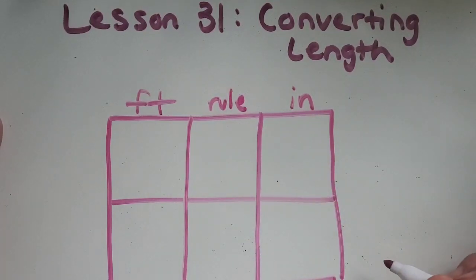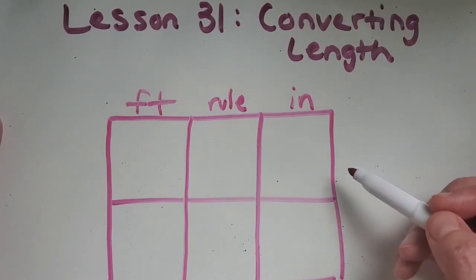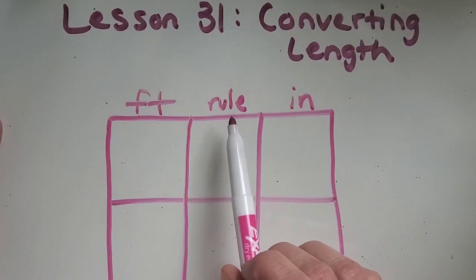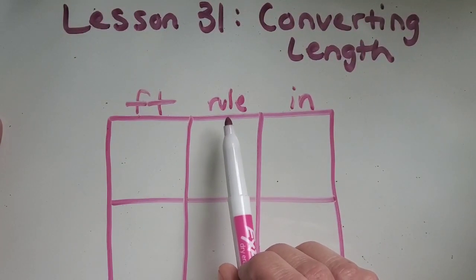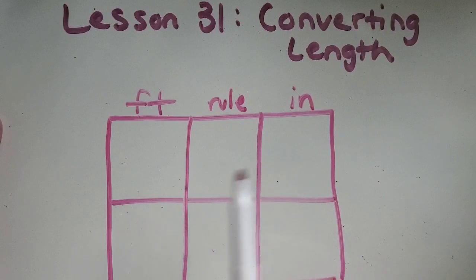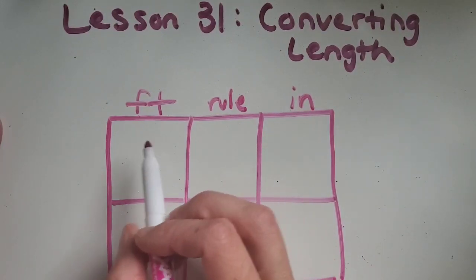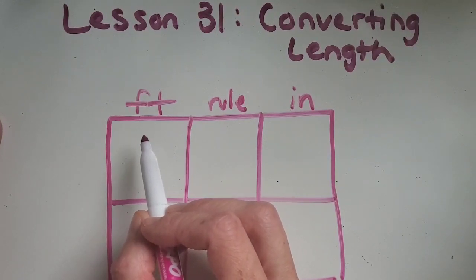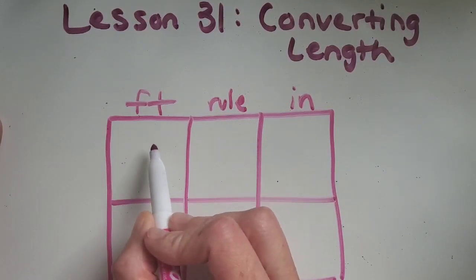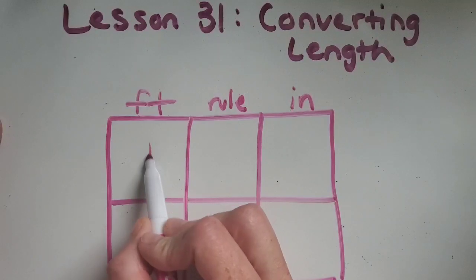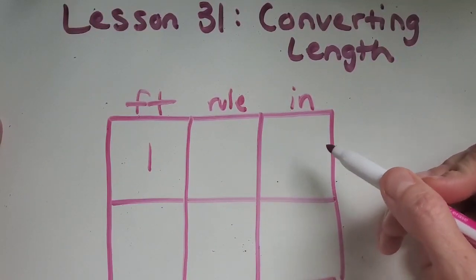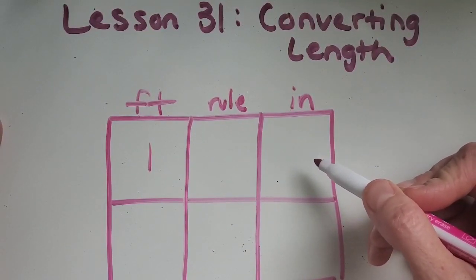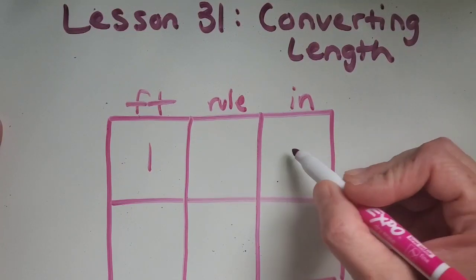And if you haven't heard that before you can go back and watch my video about input output tables. This goes perfectly with that and a rule is just a pattern to get from feet to inches or whatever two units you're working with. So in this case we can just go ahead and start with what we already know. We already know that one foot is how many inches? Okay great, 12 inches.